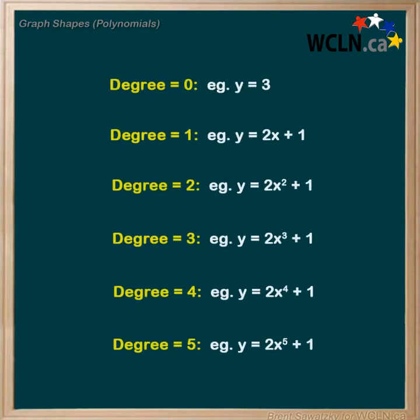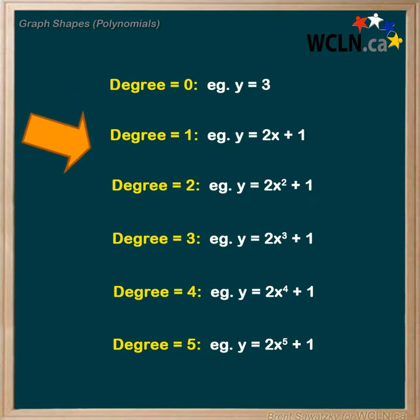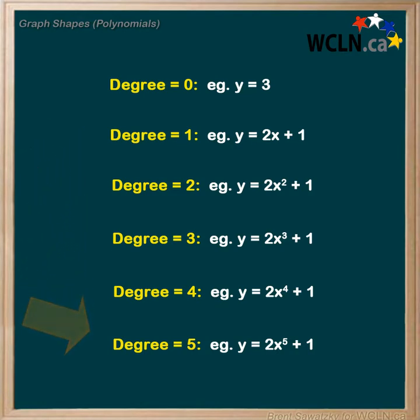In this tutorial, we'll take a look at graph trends within the category of polynomial relationships. Polynomial relationships are often categorized by their degree. So let's take a look at some example polynomials with various degrees and learn about some patterns. These patterns and trends will help us understand and make predictions around polynomial relationships and their graphs.